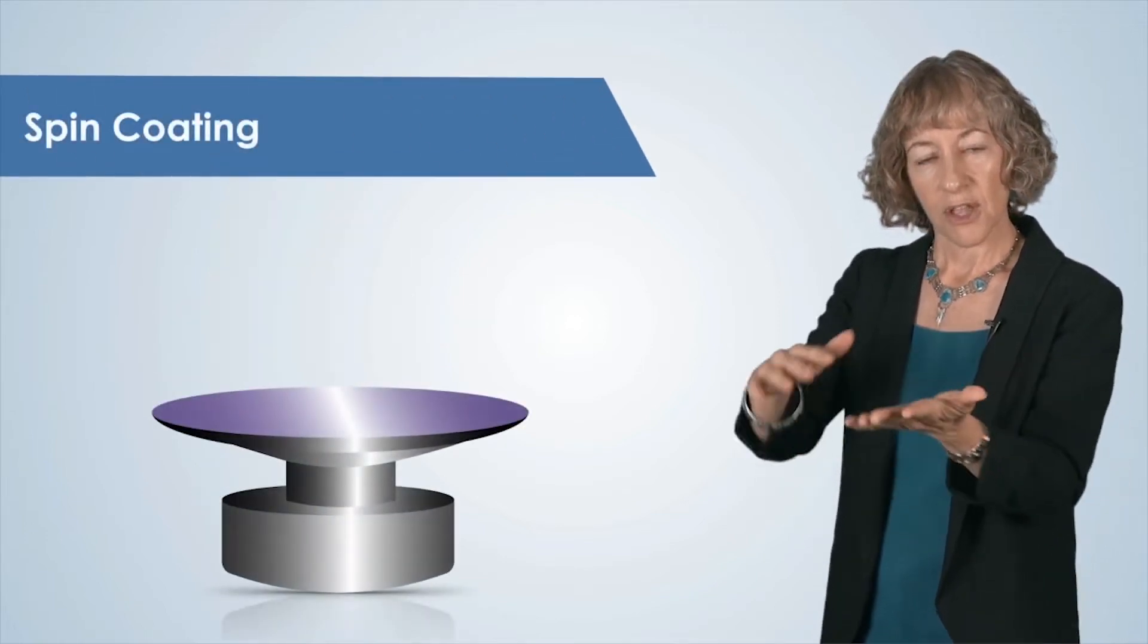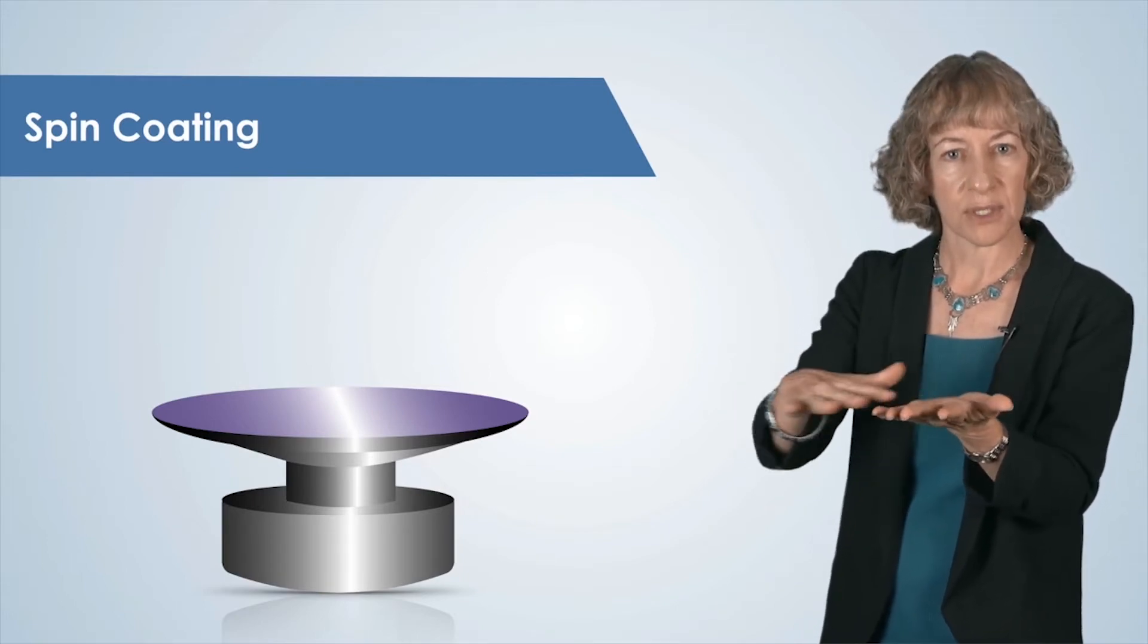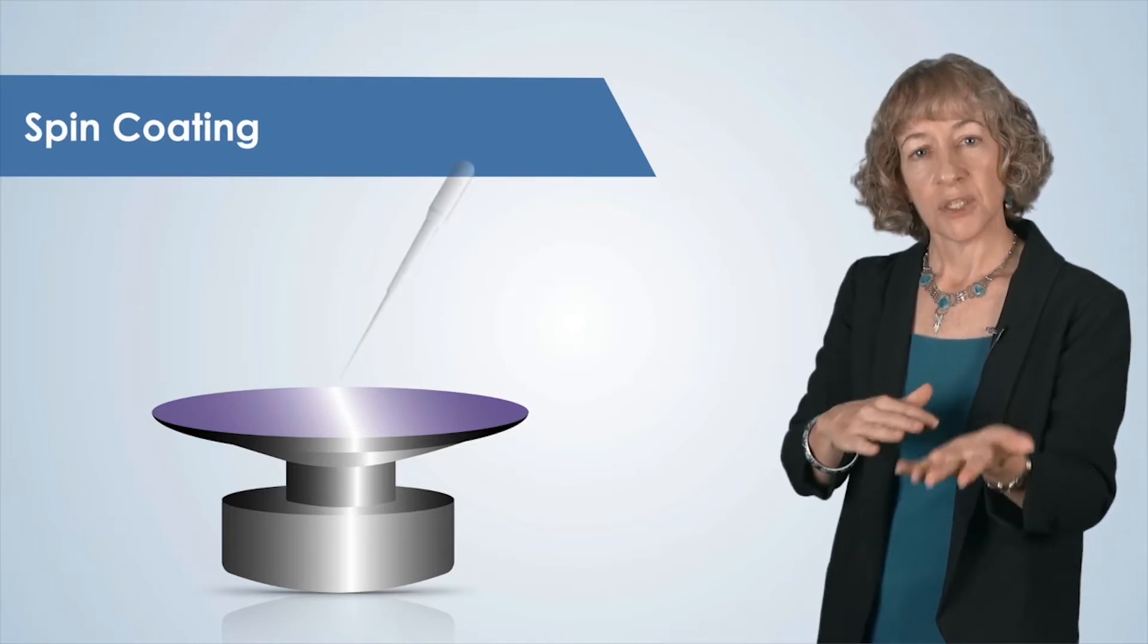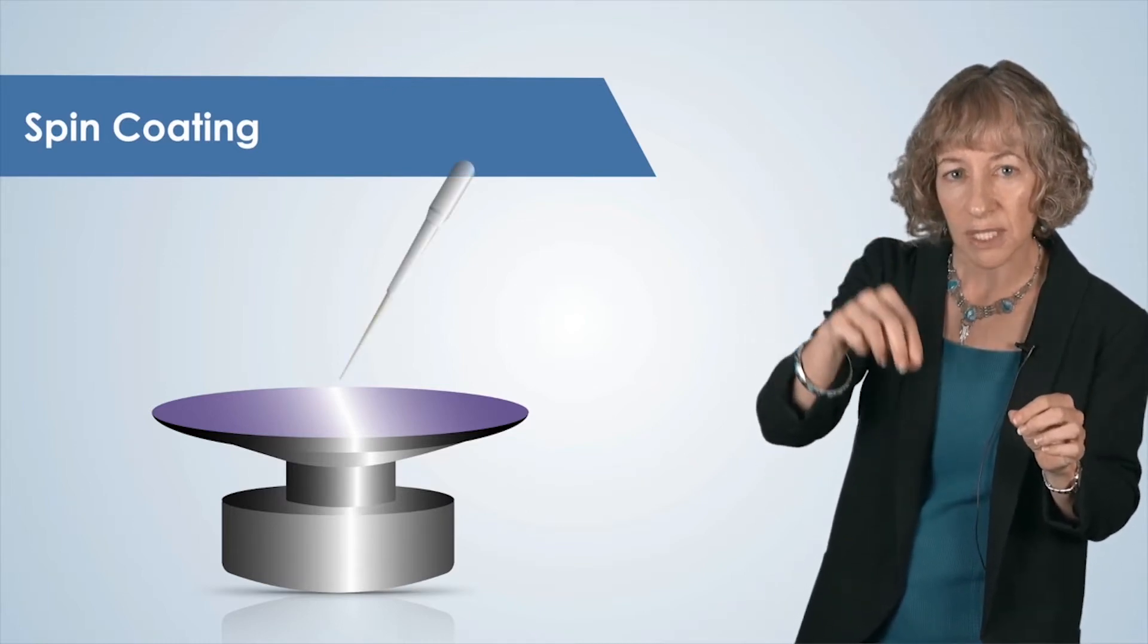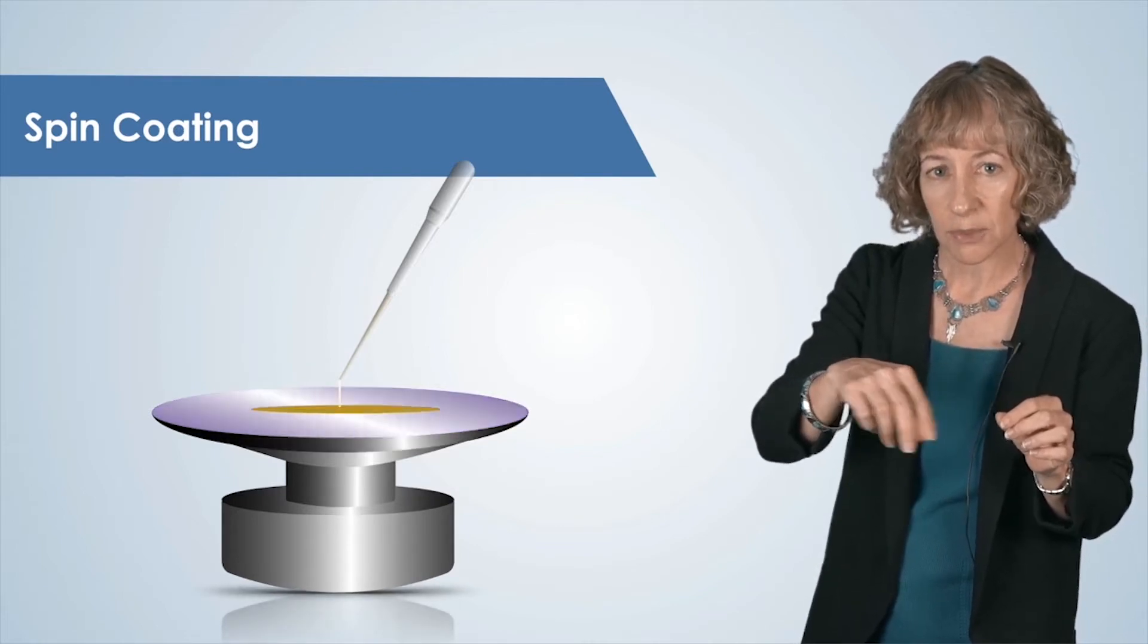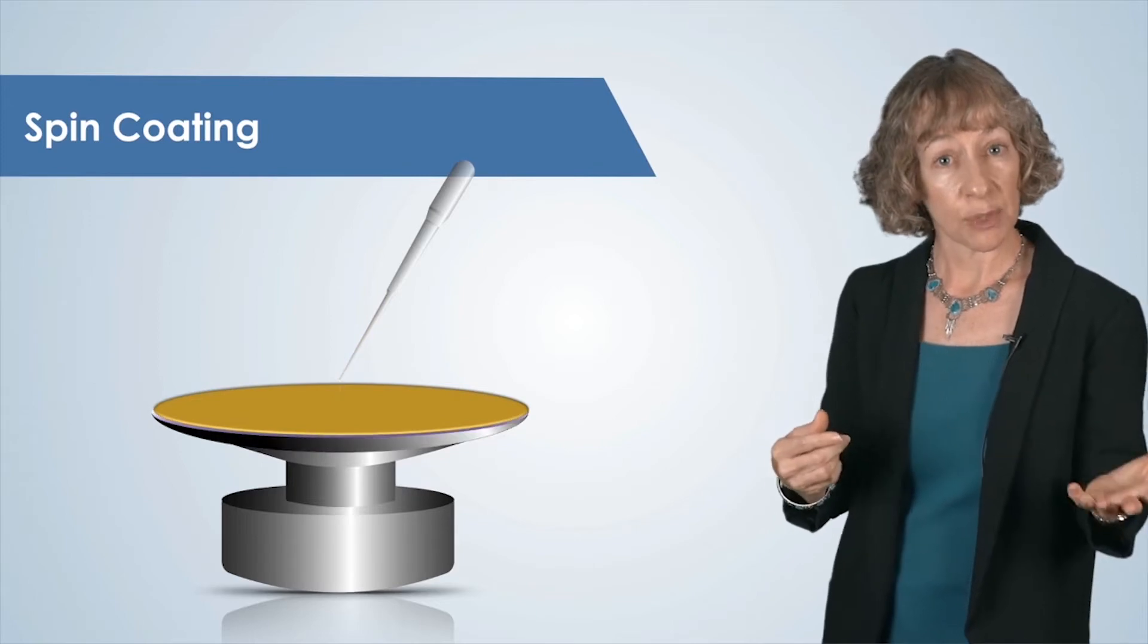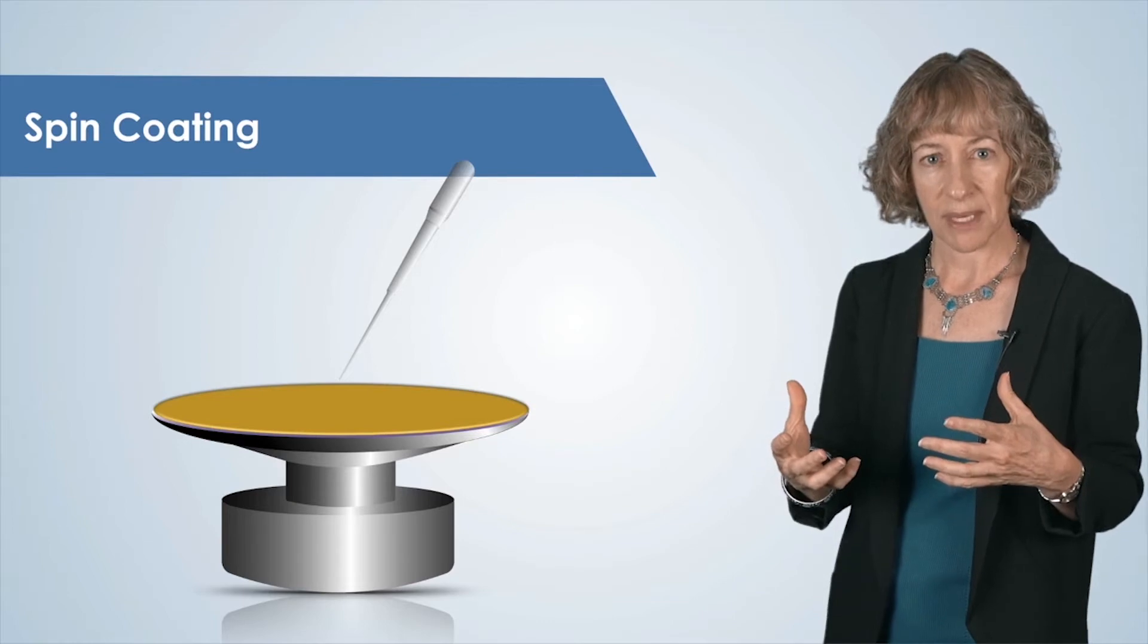To start the process, the wafer is first coated with a thin layer of this polymer photoresist, using a process known as spin coating. Spin coating is accomplished by depositing a few milliliters of liquid polymer onto the substrate, and spinning the substrate at high speeds, usually 3,000 revolutions per minute is common, and we spin for 30 seconds to one minute.